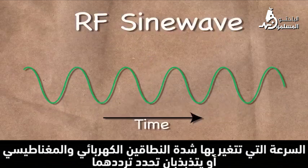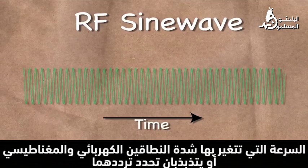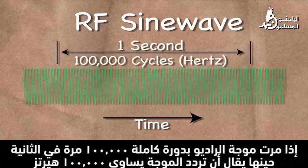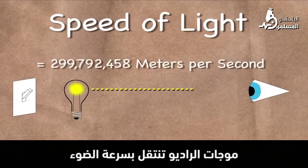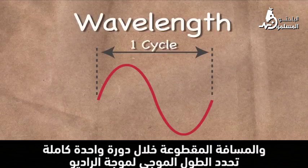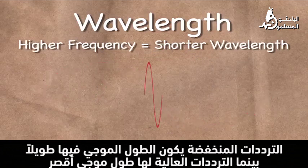How quickly the electric and magnetic fields vary in intensity, or oscillate, determines their frequency. If a radio wave passes through a complete cycle 100,000 times per second, then its frequency is said to be 100,000 Hz. Radio waves travel at the speed of light, and the distance traveled during one complete cycle determines the wavelength of the RF signal. Lower frequencies have longer wavelengths, while higher ones have shorter wavelengths.